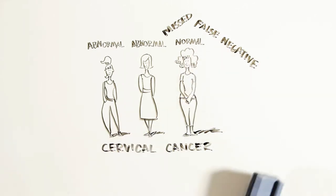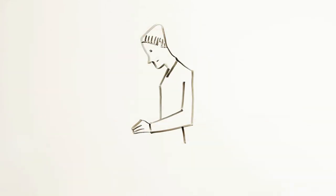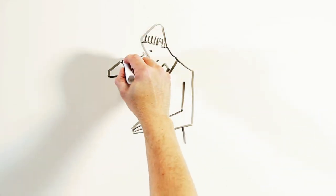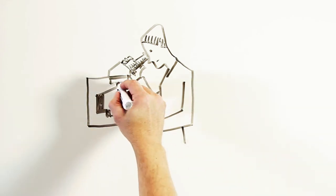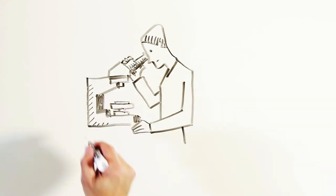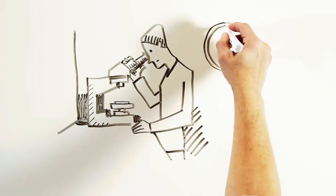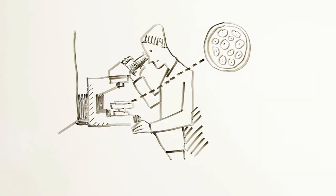We are getting ahead of ourselves. Let's go back to the 1920s. In 1928, a very clever man, Dr. Georgius Papanicolaou, discovered that by looking through a microscope, it was possible to identify abnormal cervical cells which could develop into cancer.